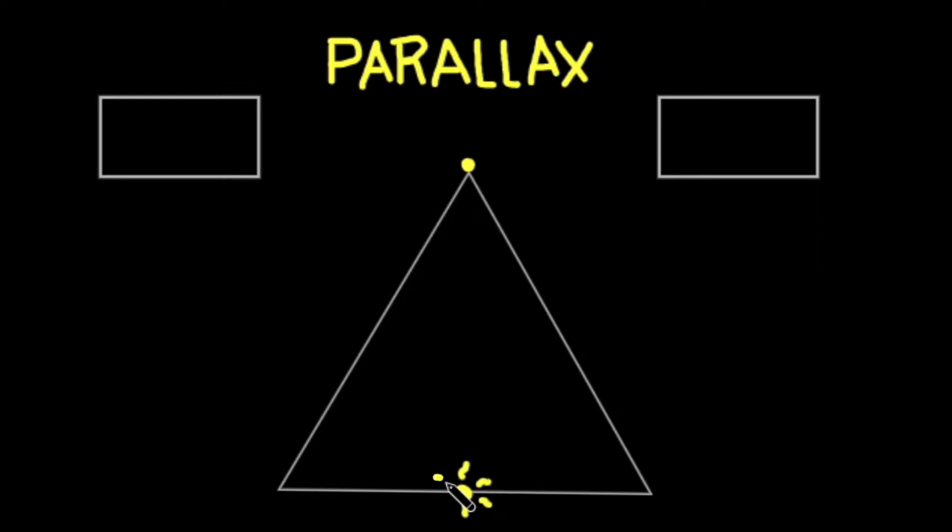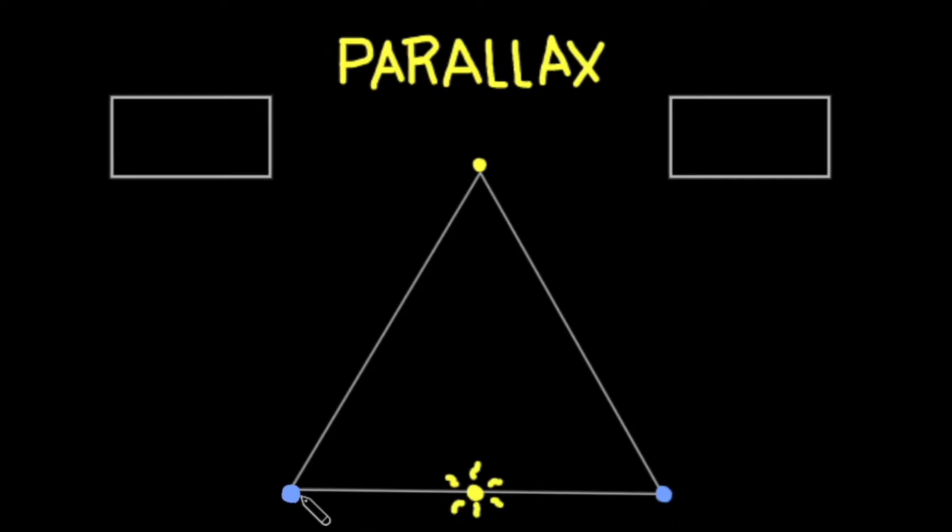Depending on where you are, stars shift relative to the background stars, i.e. stars that are much farther away. When the Earth is on one side of the Sun, you will see a star at a slightly different angle than when the Earth is on the other side of the Sun.